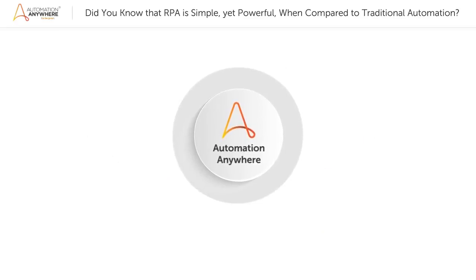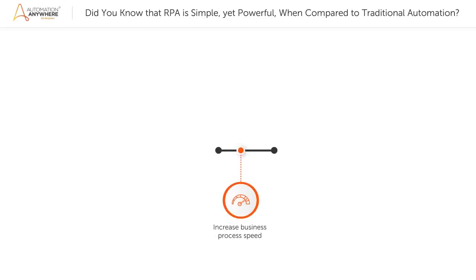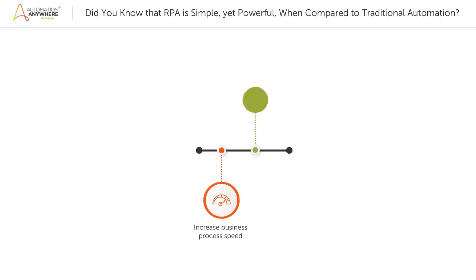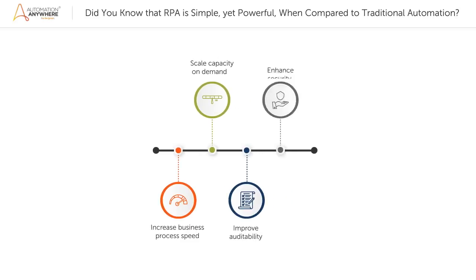The following are some of the business benefits of Enterprise RPA. Increase business process speed — bots execute at the fastest possible pace, never slowing down or taking breaks. Scale capacity on demand — RPA is infinitely elastic and increases or decreases bandwidth in real time with bots at your service. Improve auditability — everything that RPA bots do is monitored and recorded. Enhance security — RPA enables unprecedented security with separation of duties, access control, and ironclad encryption and architecture.